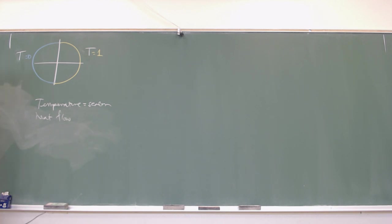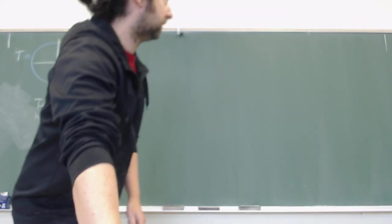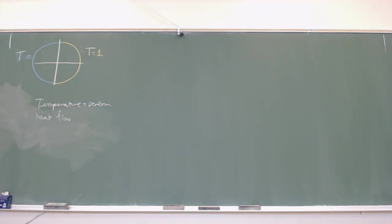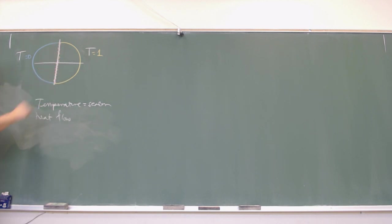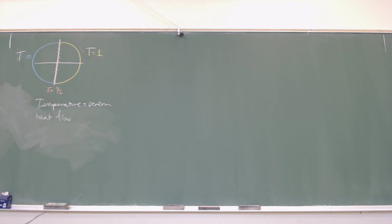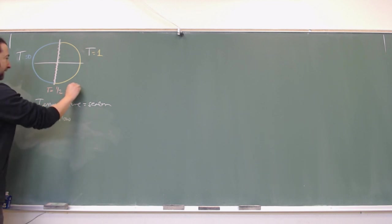You can guess what the temperature map looks like. If I drew lines representing places where the temperature is constant, probably T equals one-half is the line running down the middle, because the problem is symmetric. Lines of constant temperature have a name: those of you who have taken engineering or thermodynamics have probably seen the term isotherm before.